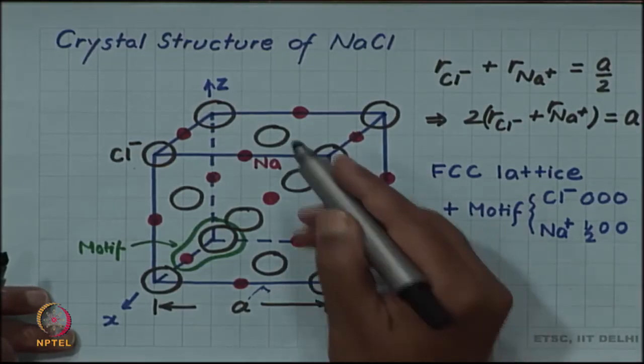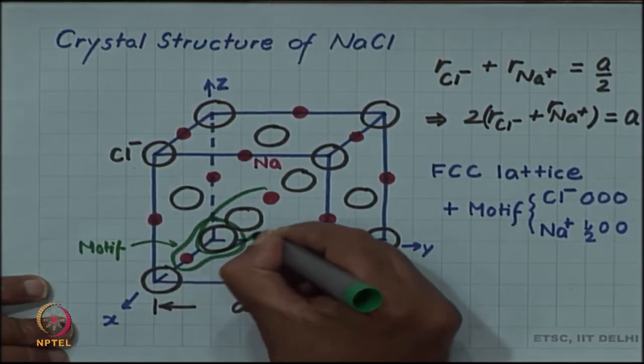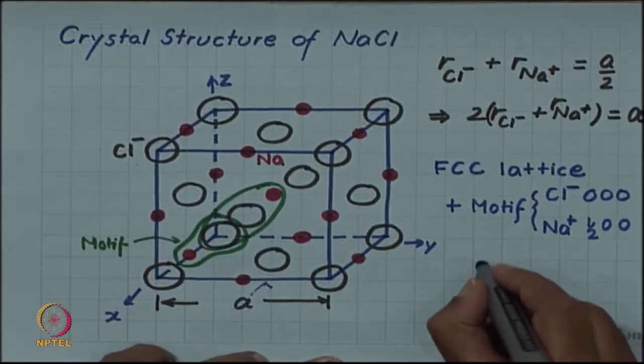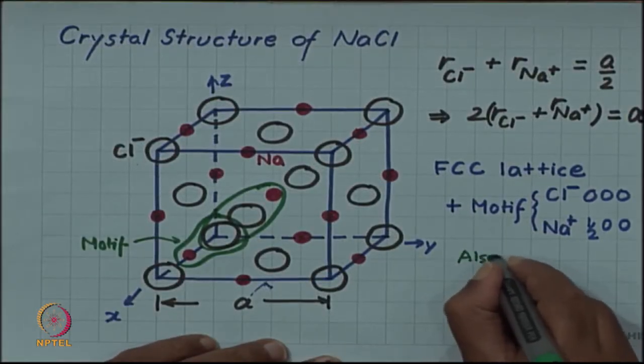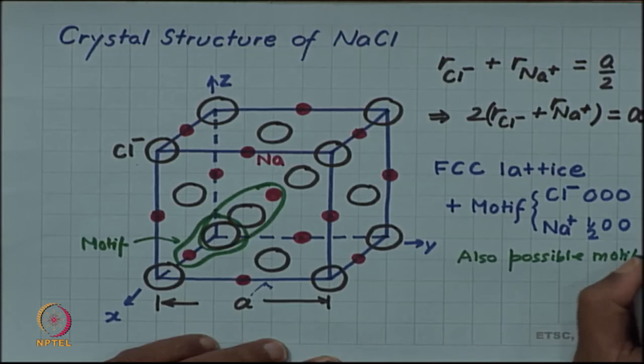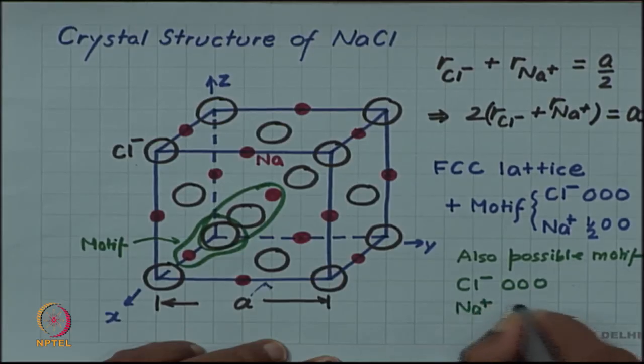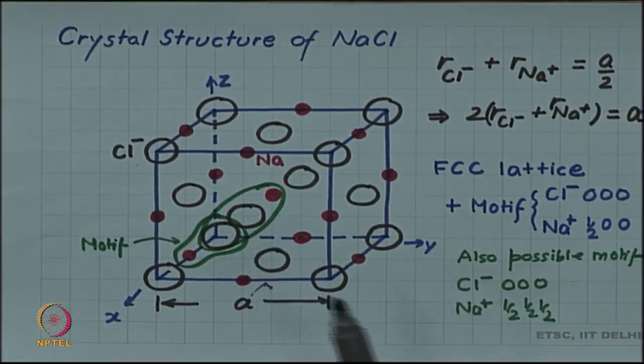Sometimes some authors feel that it is better to take a motif with the chloride ion at (0,0,0), but sodium ion at (1/2, 1/2, 1/2). Although this sodium ion is not nearest to this chloride ion, it has symmetric coordinates with respect to x, y, and z. In that sense, it appears better to select the central ion as part of the motif.